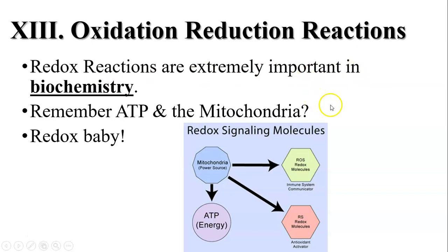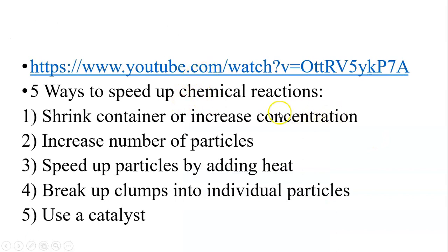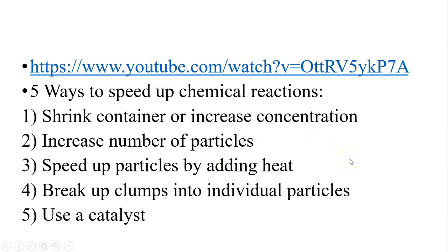Redox reactions are very important in biochemistry — remember ATP and mitochondria? That involves a lot of redox. As a bonus, here are five ways to speed up chemical reactions: shrink the container or increase concentration, increase the number of particles, add heat to speed up particles, break up clumps into individual particles, and use a catalyst — something that gets the reaction going without itself being consumed. This is the last video of the school year — thanks, have a good summer!